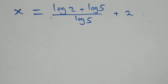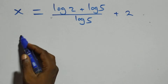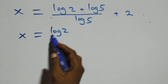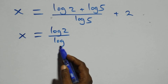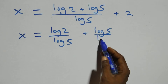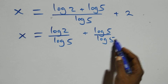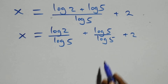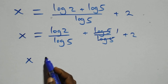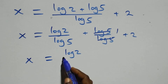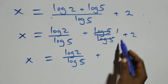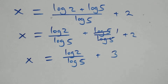We separate into two fractions: x equals log 2 over log 5, plus log 5 over log 5, plus 2. The log 5 terms cancel, leaving one, so x equals log 2 over log 5 plus 1 plus 2, which equals log 2 over log 5 plus 3.